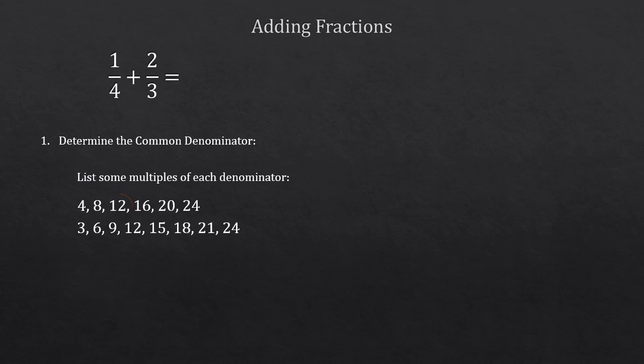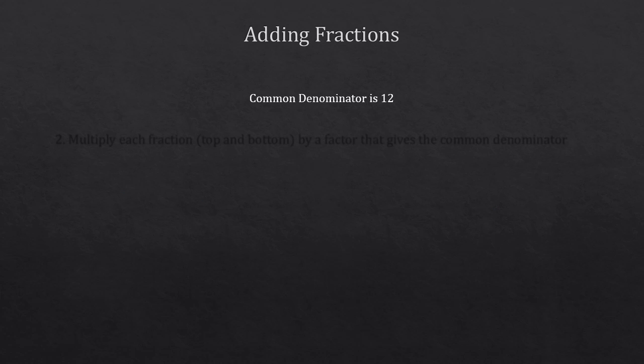Then, we need to compare our list to see which multiples are in common. 12 is common, and 24 is common. But we're interested in 12 because 12 is the least common multiple. So, 12 will be the common denominator.